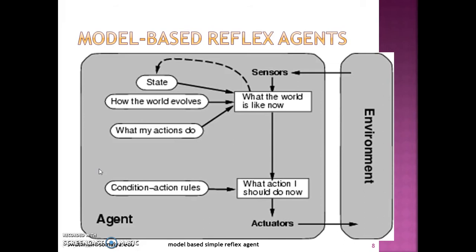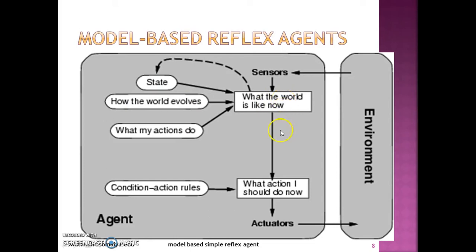Here are the building blocks for the model-based simple reflex agent. The environment is independent or external to the agent. The agent perceives the environment through the sensors. Then the internal state, how the world evolves (the knowledge base), and what my actions do — all three things in combination give us what the world is like right now. Based on the condition-action rules and what the world is like right now, the agent architecture decides what action it should do, and those actions are performed by the actuators on the environment.